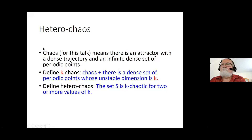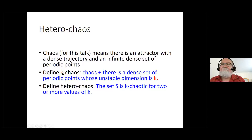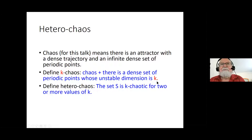In any case, chaos means that there's an attractor with a dense trajectory that wanders throughout the attractor, coming arbitrarily close to every point. It also has an infinite dense set of periodic points. We're not using the Lyapunov exponent definition. To be more specific: the logistic map has one-dimensional chaos — it's unstable with a dense set of periodic points whose unstable dimension is one. The Hénon map is also one-chaos. The Lorenz system of differential equations, the three-dimensional system, is also one-chaos.